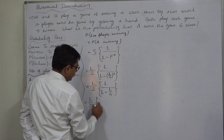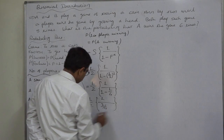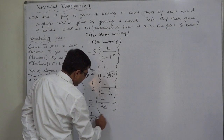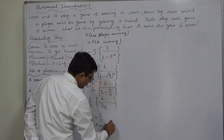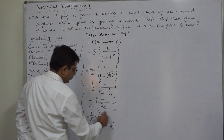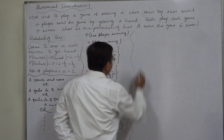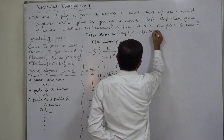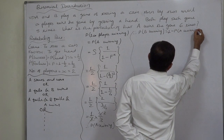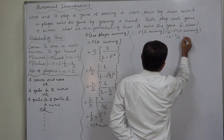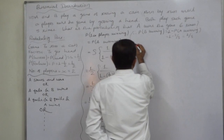That is 1 by 2 into 1 upon 1 minus 1 by 4, which is 1 by 2 into 1 upon 3 by 4. Therefore, probability of A winning the game equals 2 by 3. And probability of B winning is the complement event, so probability of B winning will be 1 minus P of A winning, that is 1 minus 2 by 3, which is 1 by 3. These are respectively P and Q so far as the binomial distribution is concerned.